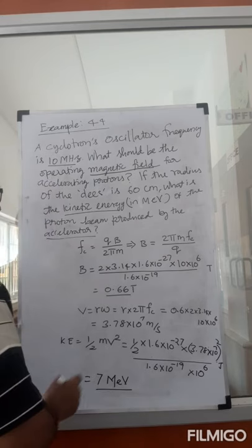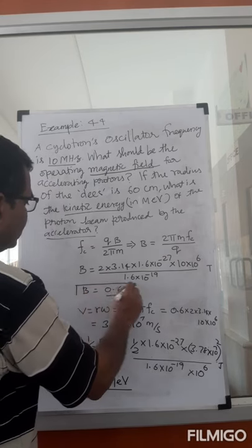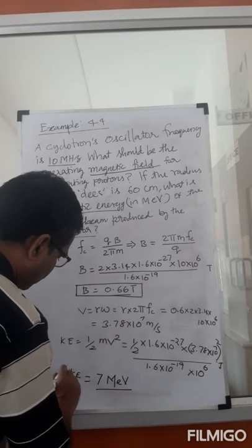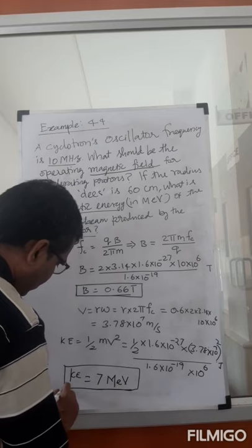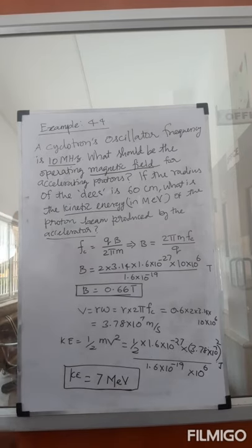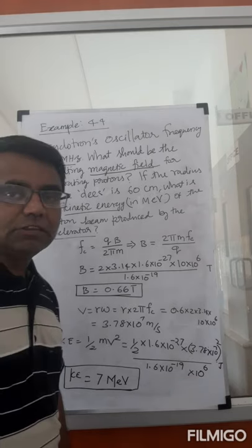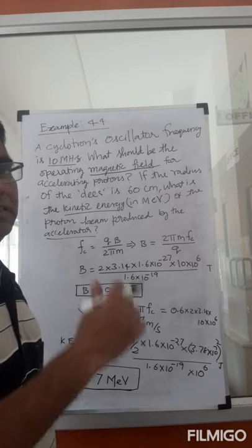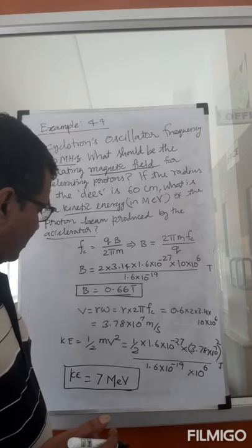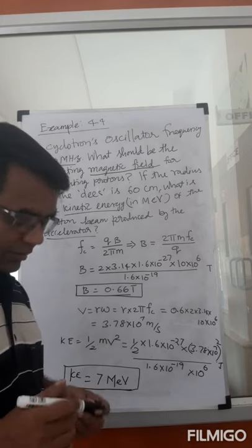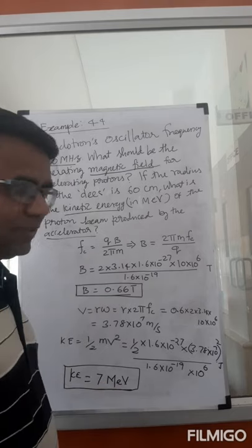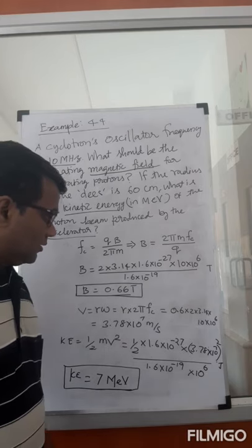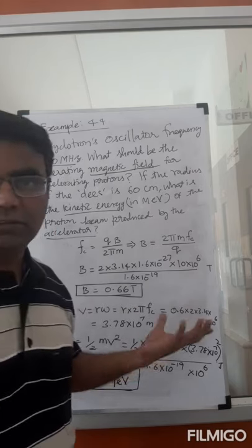So you find B is approximately 0.66 T and the kinetic energy is approximately 7 mega electron volts — that is the kinetic energy of the proton beam coming out of the D. This is a very simple, straightforward application of the formulas — nothing tricky about it.